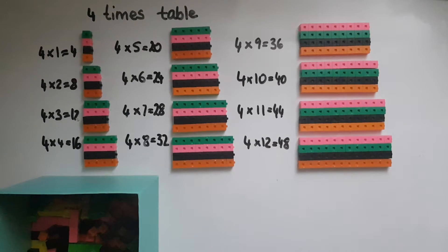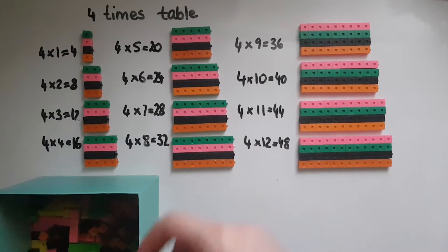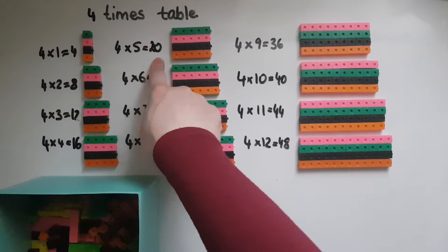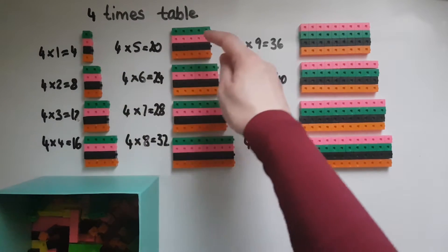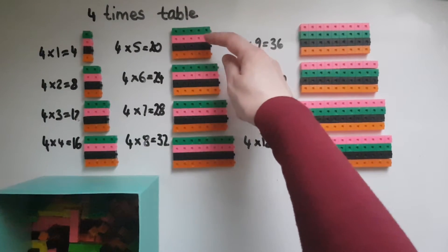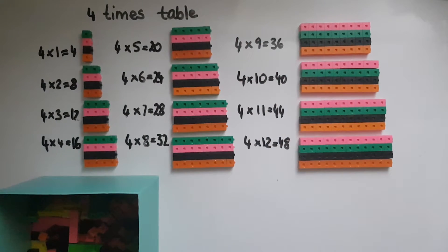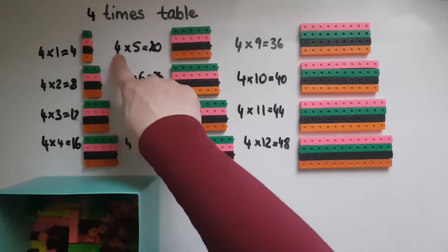In other words, this is the same as adding the same number four times. So four times five is twenty because it's four lots of five: five plus five plus five plus five. But it can also be broken down further.